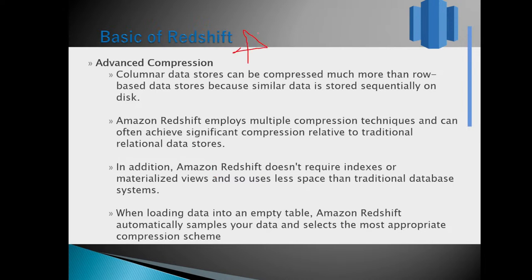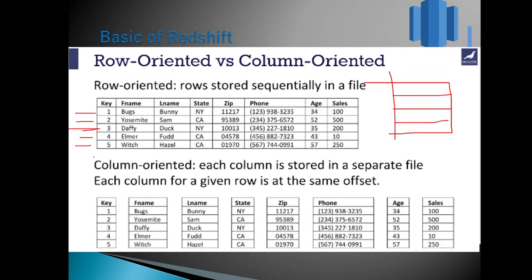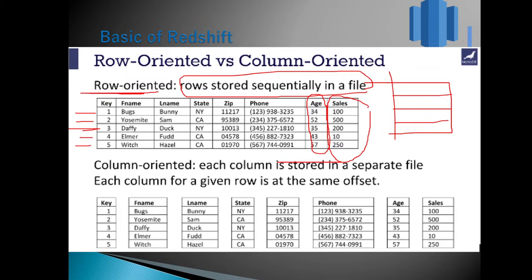An important feature of Redshift is how it stores data. Normally data is stored row by row — record by record — in your hard disk. If you want to fetch just the average age column, you still have to read all records, which is slow. Redshift instead splits the data into a columnar format: each column is stored in a separate file.